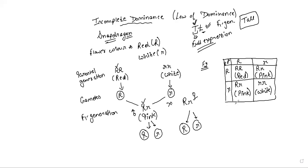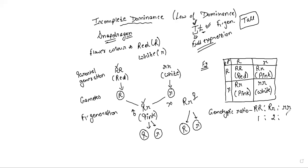Looking at this F2 generation, we write down its genotypic ratio. There are three types of genotypes: homozygous dominant, heterozygous, heterozygous, and homozygous recessive. So the ratio is 1:2:1. This is the same genotypic ratio as Mendel's monohybrid cross genotypic ratio.